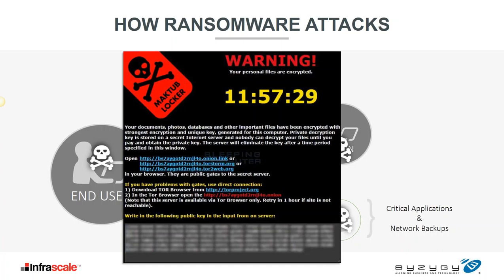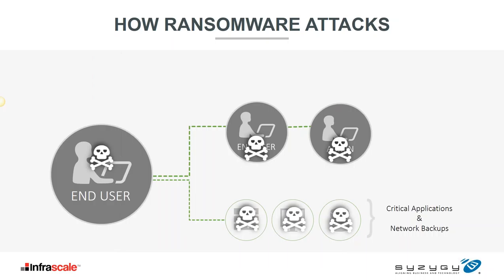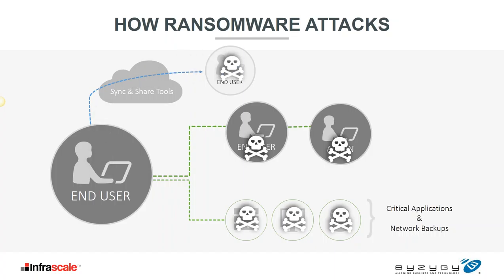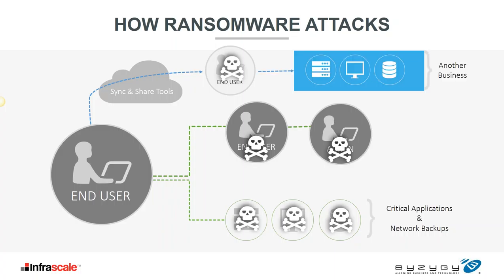Another attack vector: people using file-sharing or productivity tools on their own laptops. Ransomware can spread via these tools as well. Once that happens, another user gets ransomware from what appears to be a trusted source and a trusted file. It gets on their machine and the cycle continues.